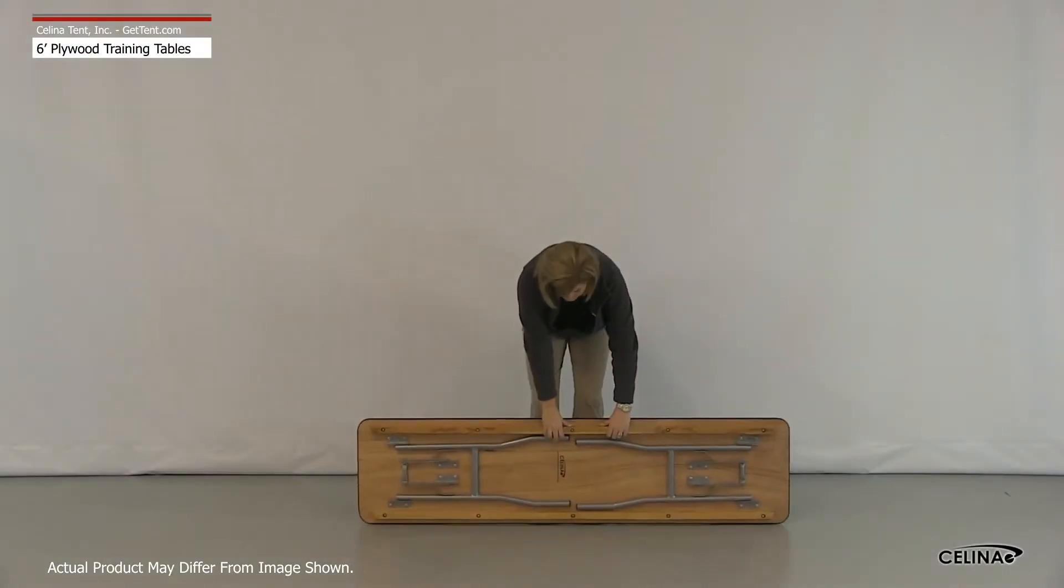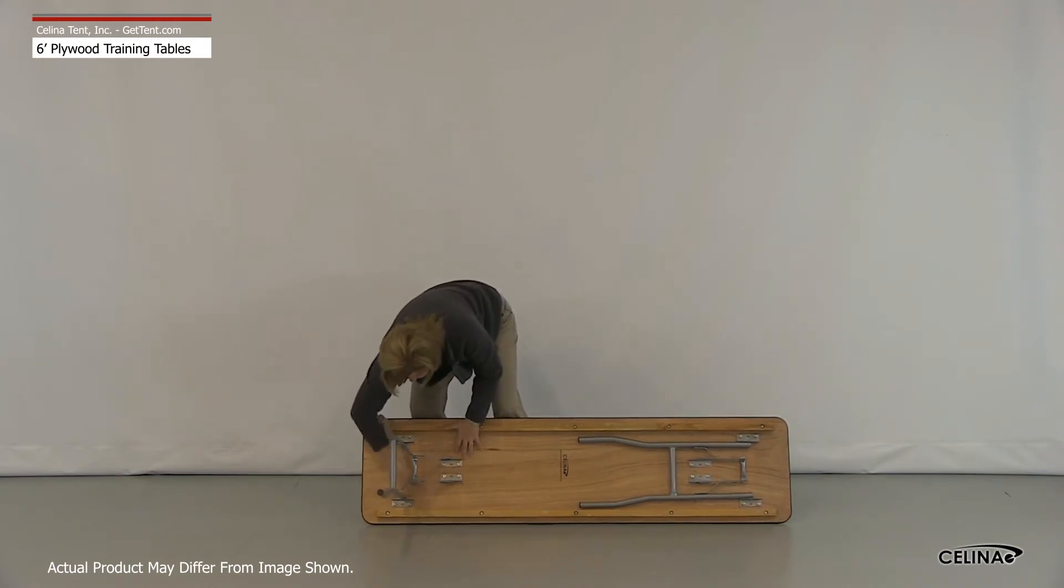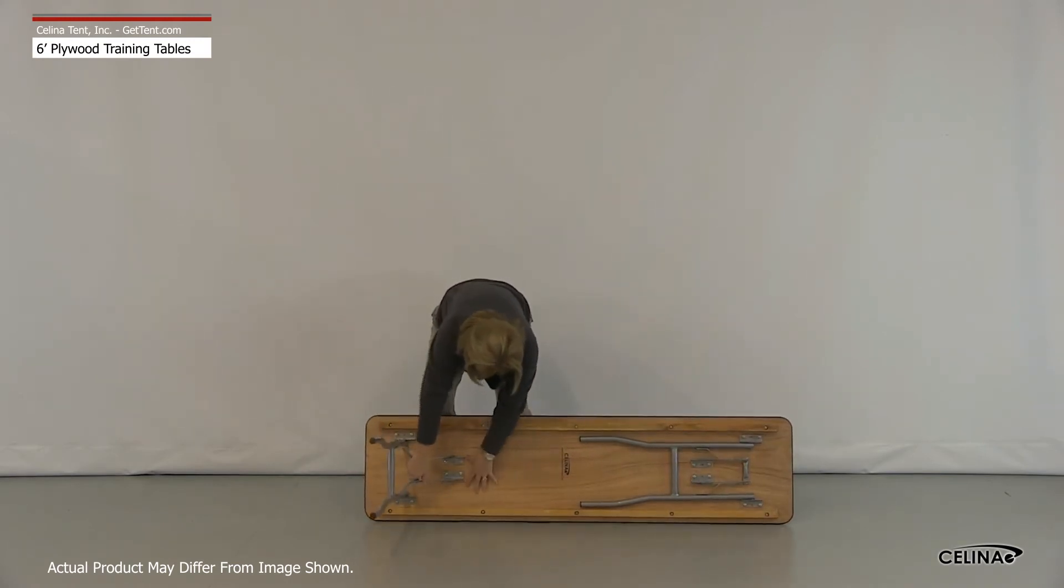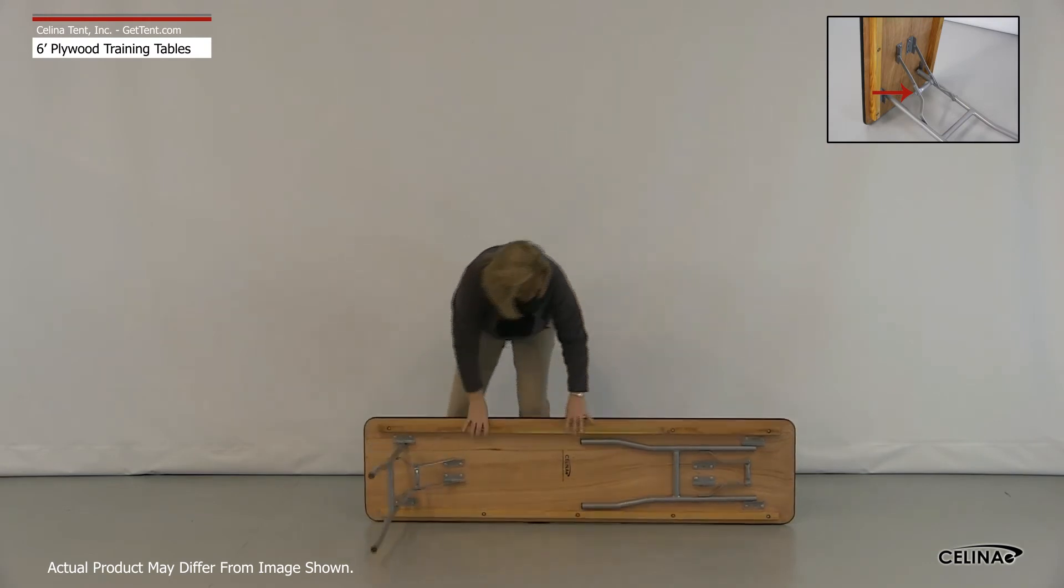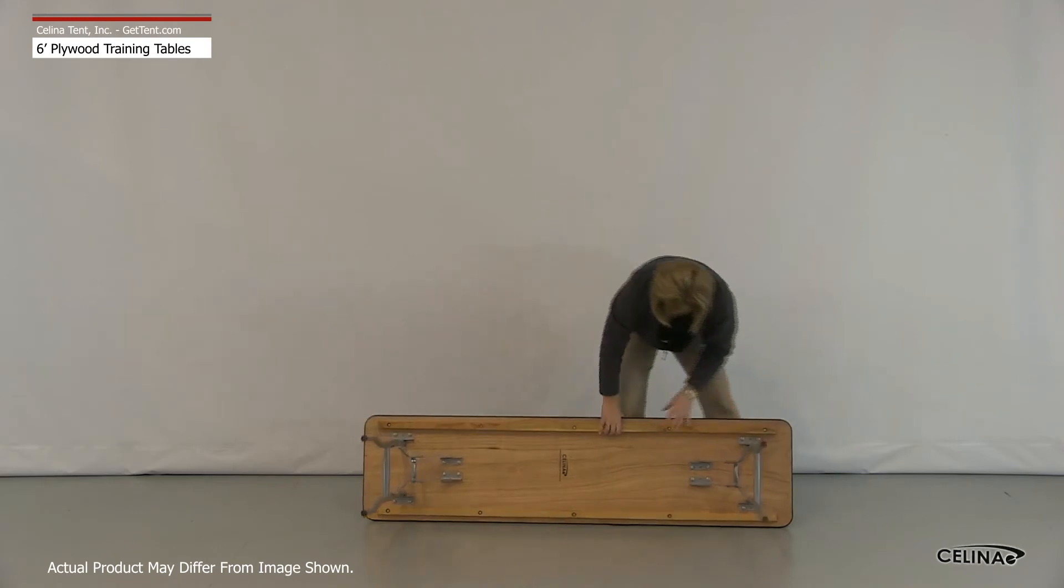To set up, set the table on its side. Pull the legs to their extended positions, then grasp the cross-handle portion between the legs and lock them into place by making sure the dimple lock in the folding portion snaps together. Finally, set the table upright.